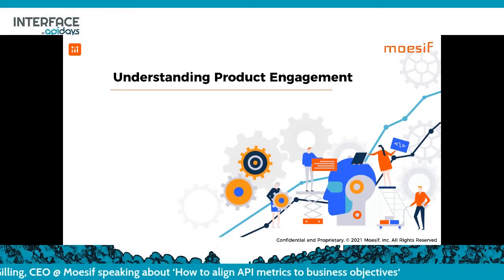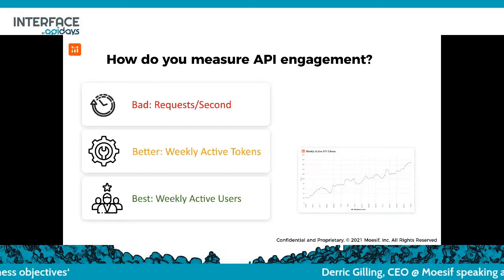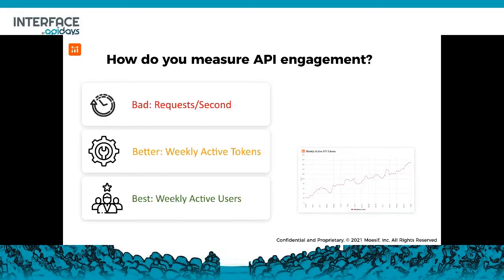Let's talk about why someone is using this platform — it's not just about adoption, it's about being fully engaged and getting value. How do you actually measure API engagement? A bad metric is requests per second — a single developer could hit your API thousands or millions of times without getting any value. Weekly active tokens is a better metric, but what if someone creates a new token every week? Then you don't have an accurate measurement of true active users. The best way to measure engagement is through weekly active users — how many different accounts or developers are using your platform on a daily or weekly basis. For APIs it's usually weekly, given not every person uses the platform daily.